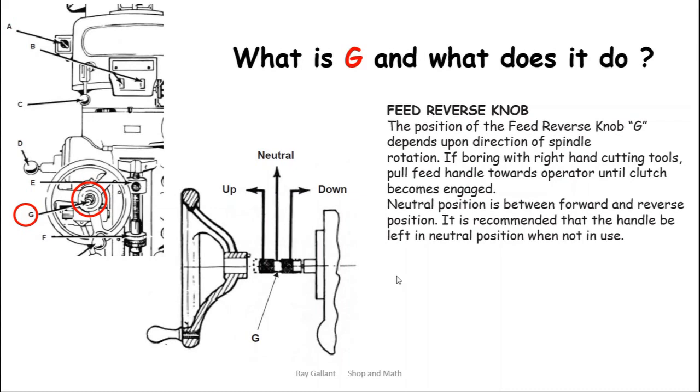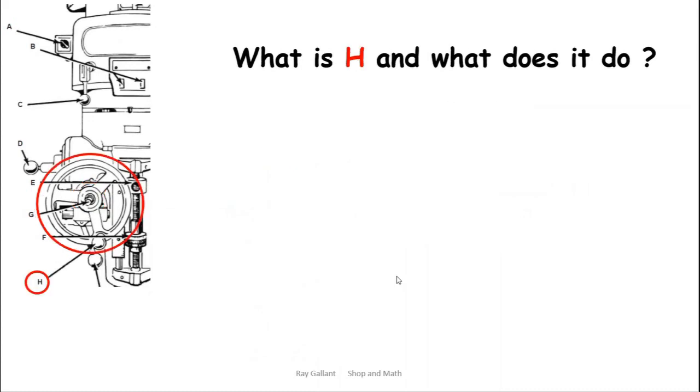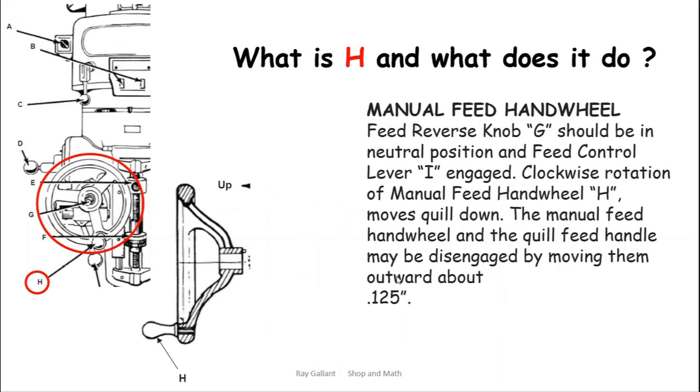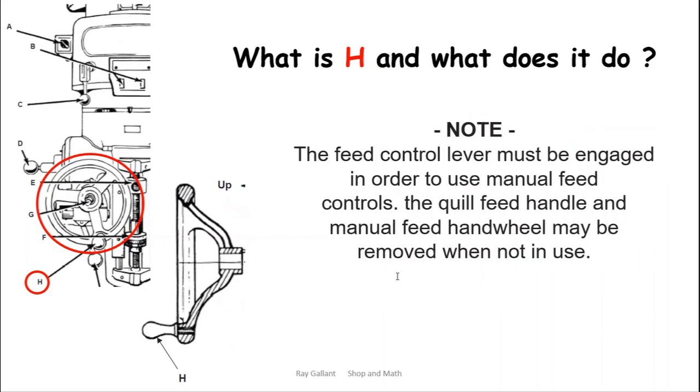H: the hand wheel. You'll find in a lot of cases the reversing knob and the hand wheel are usually damaged because people don't move their part away and they end up hitting it with a hammer. So be very careful when you're swinging your hammer what you're gonna actually hit with it.